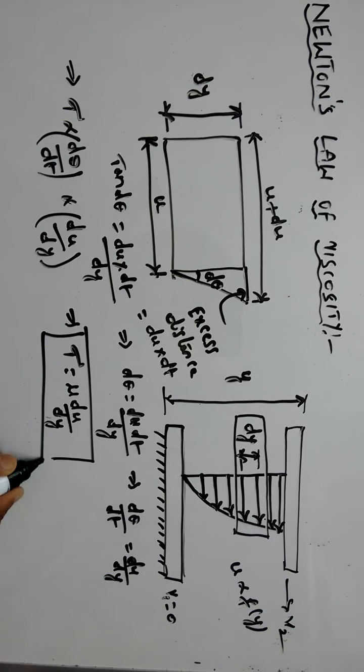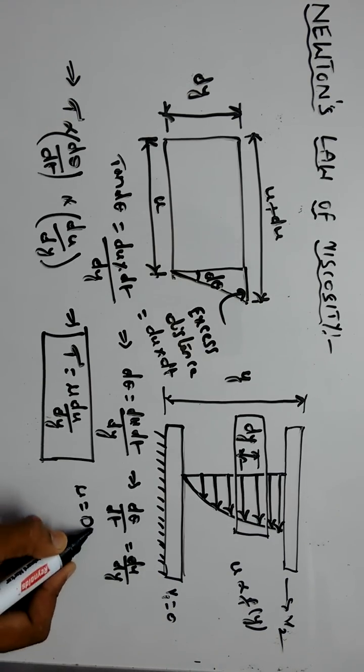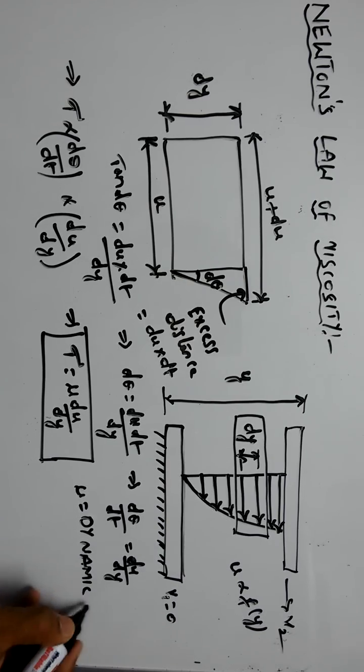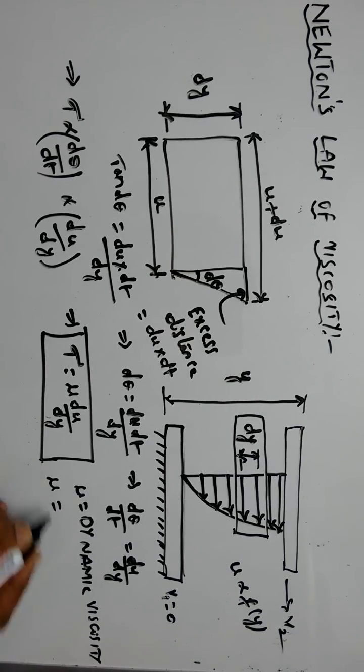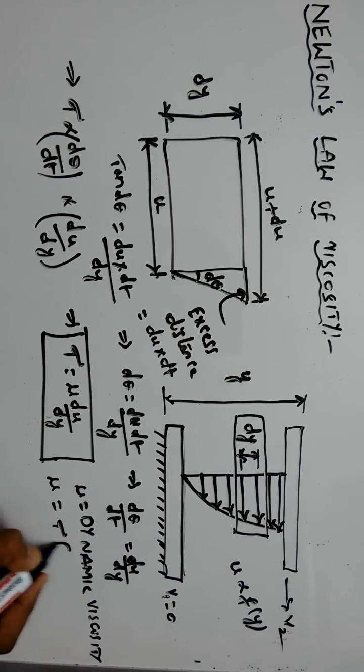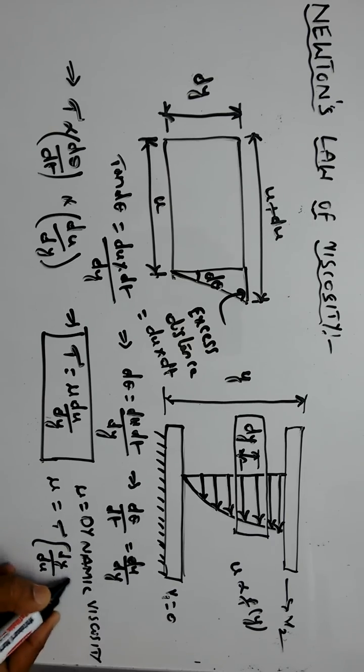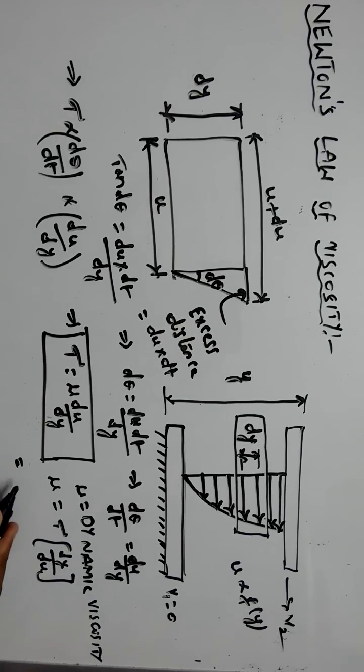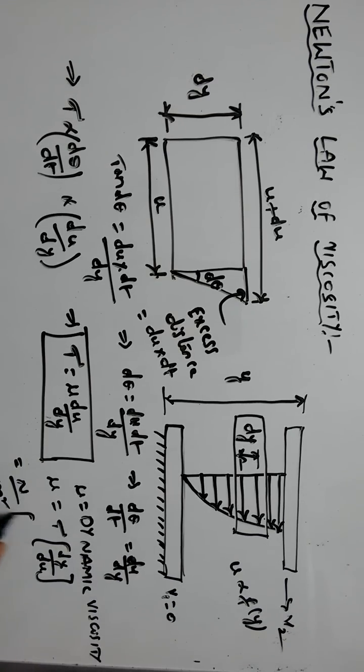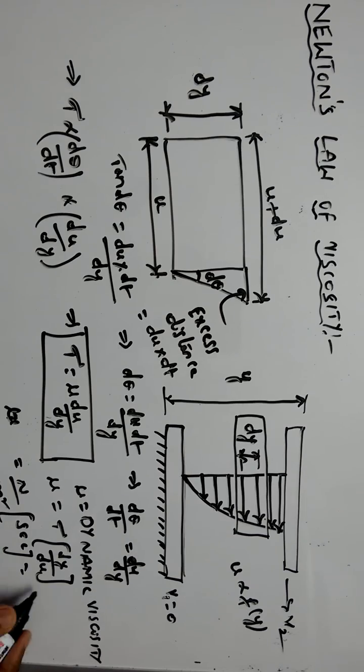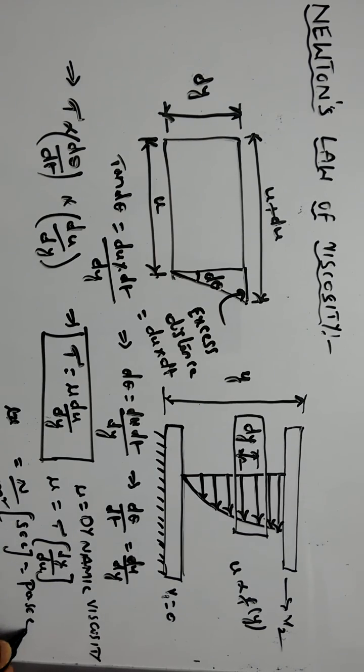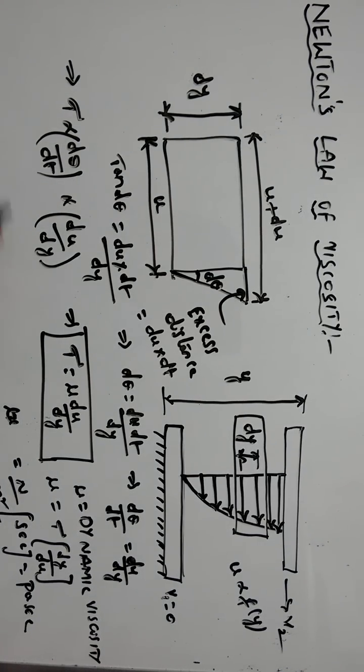This is Newton's law of viscosity where mu is the dynamic viscosity. The units of shear stress are Newton per meter square, and dy by du is seconds. Therefore, the units are Newton per meter square second, which means pascal seconds, and the dimensional units are M L inverse T inverse.